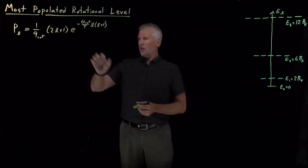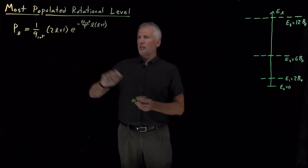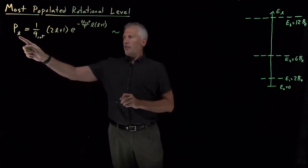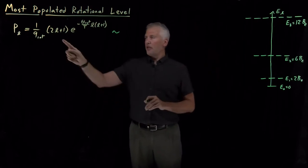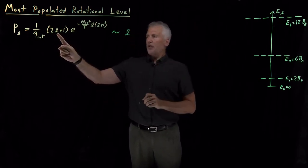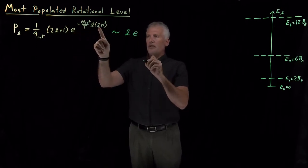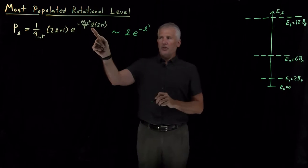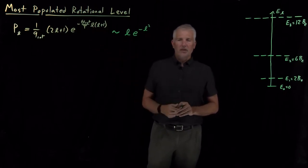If we look more closely at this equation, it has constants throughout, but it depends on the quantum number L. The probability as a function of L has the degeneracy showing up in front of the exponential as a linear term, and then the exponential looks like e to the minus L squared plus L — so in a rough sense it looks like L times e to the minus L squared.